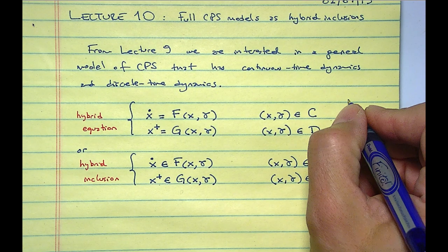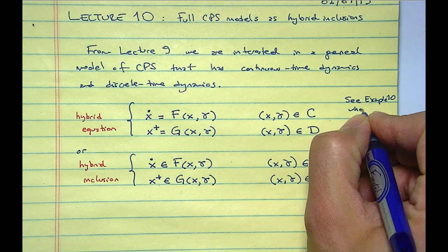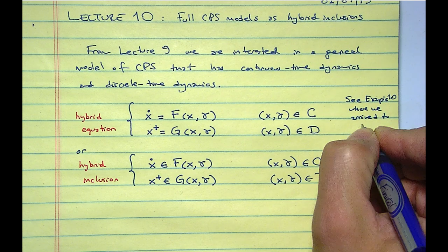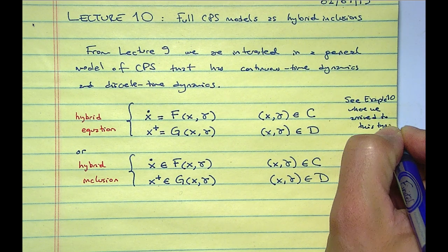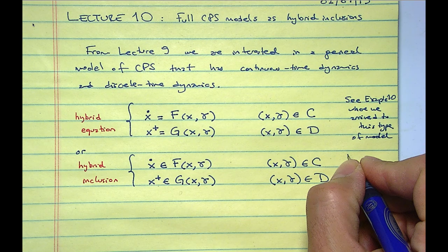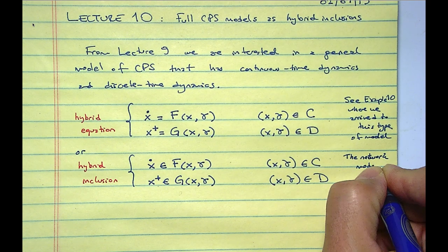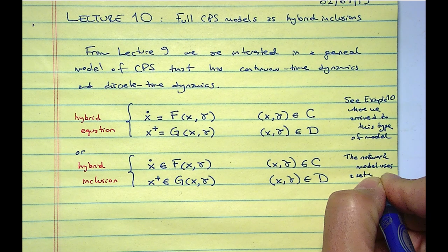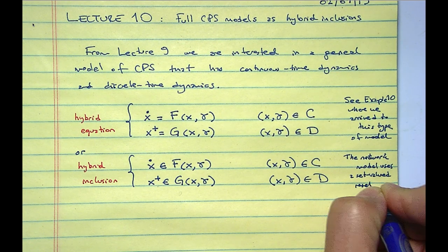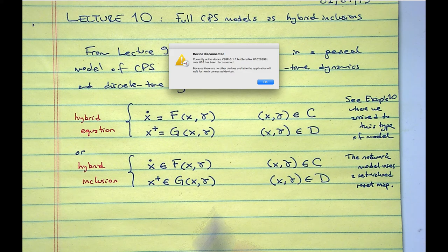As you remember from the timer model used for the network model, we may also want the right-hand side G to be set-valued. That's what we mean by a hybrid inclusion. In that case, the velocity of x is not necessarily assigned by a single value of f, but by any value in f—allowing non-uniqueness during continuous evolution, as long as x and input gamma are in C. Similarly, the new value of x is some value in the set-valued map G. For the timer case, we had an interval for the variable, allowing all possible switching times within a window.